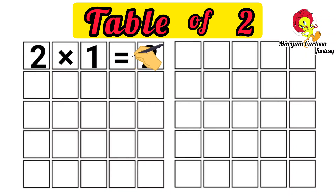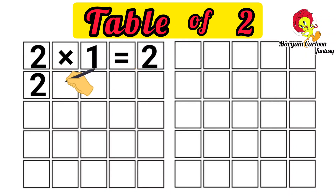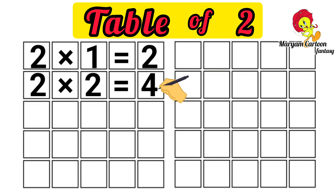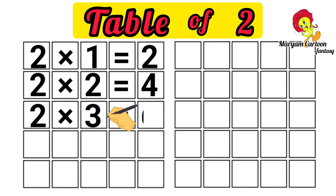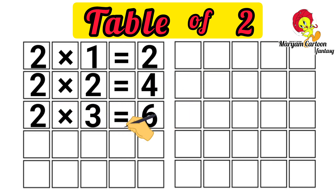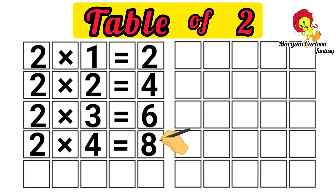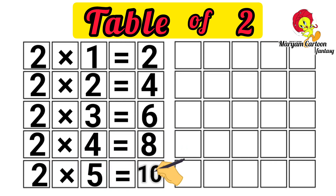2 1's are 2, 2 2's are 4, 2 3's are 6, 2 4's are 8, 2 5's are 10.